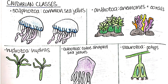We have a few different nidarian classes within the phyla nidaria. We have hydrozoa — the class of the hydras. We have cyphozoa — the class of the common sea jellies. We have starozoa — beautiful polyps found in the ocean that don't have a medusa form. And we have cubozoa — the cube-shaped sea jellies, which is the class that the infamous box jelly is in.